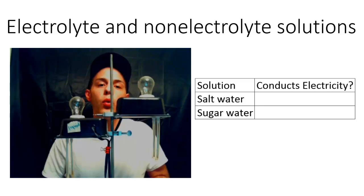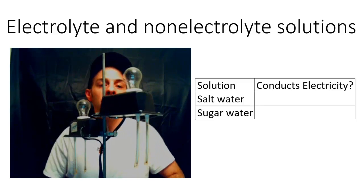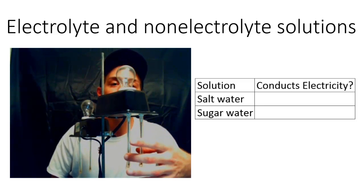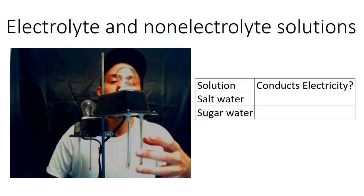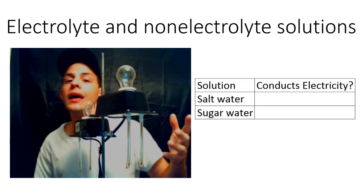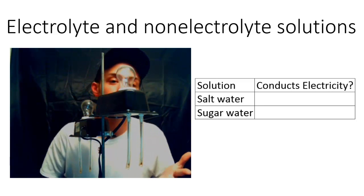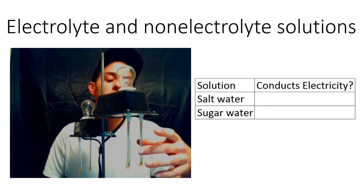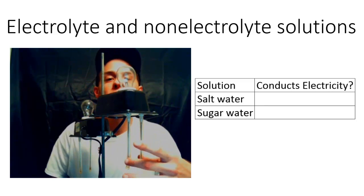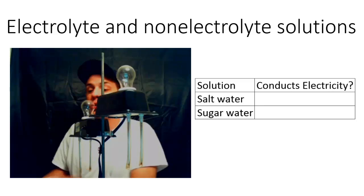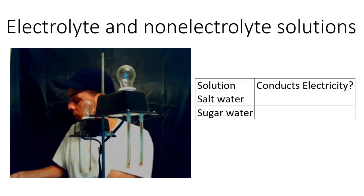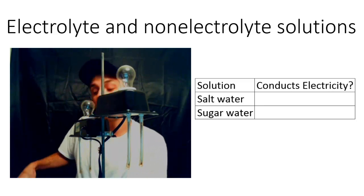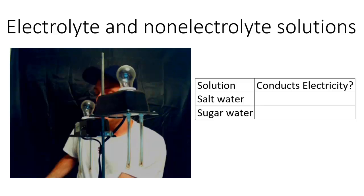The way the conductivity testers work is there are two leads that point downward and there's a light bulb on top. This is basically an incomplete circuit, and when these two leads are placed in a conductive material, that conductive material is going to complete the circuit and the light bulb is going to glow.